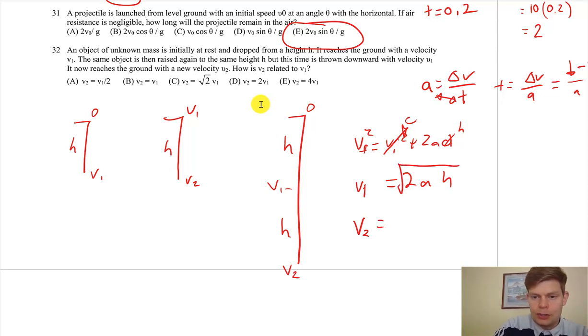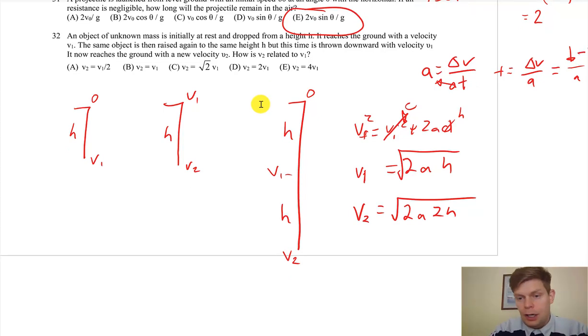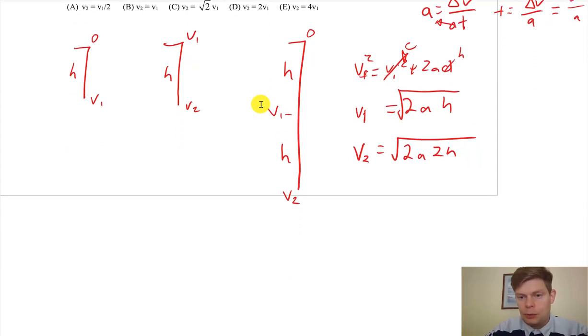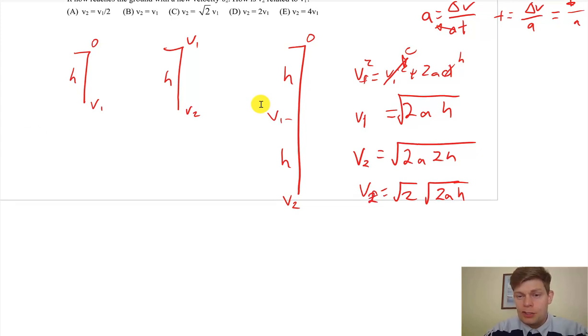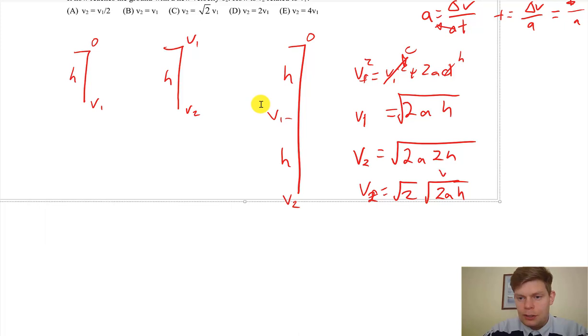Whereas v2—√(2a·2h) because it fell twice as far effectively. And then we can just pull that out, pull out this 2, so v2 equals √2·√(2ah). Or v2—so think about it, this is just v1. So v2 equals √2 times v1.